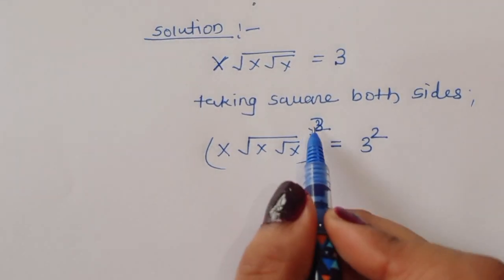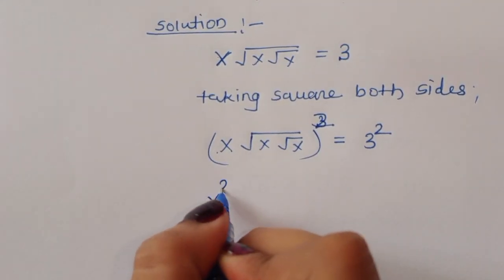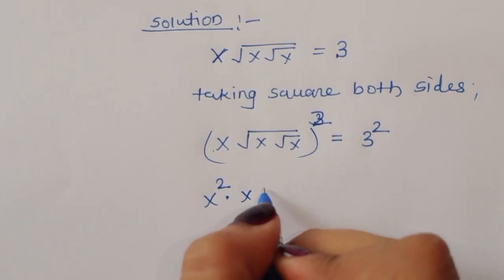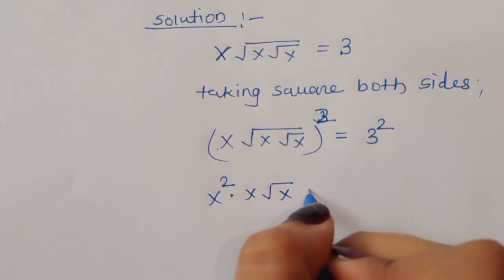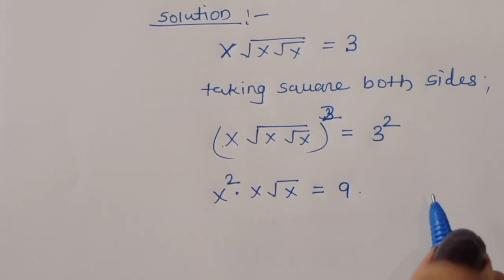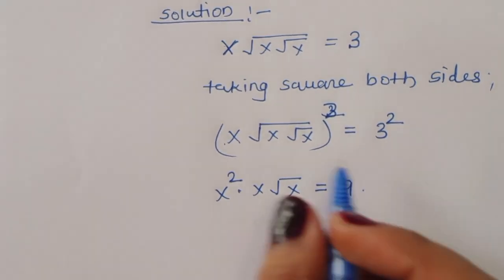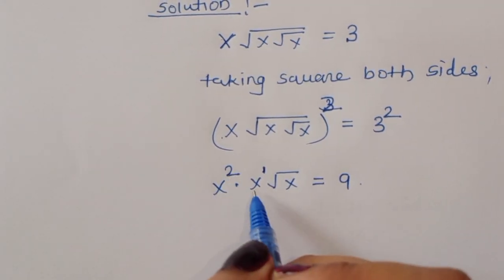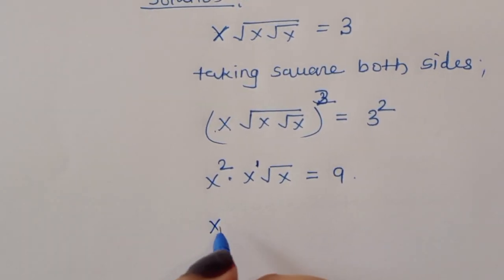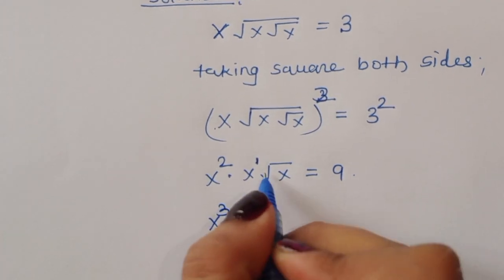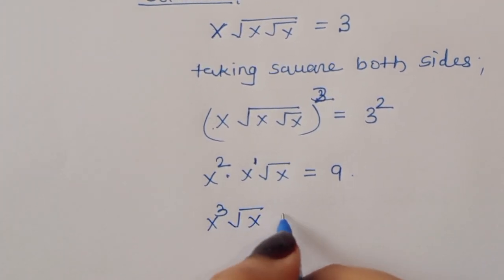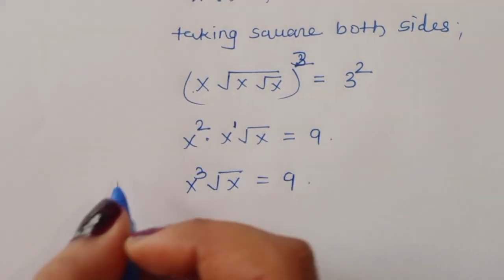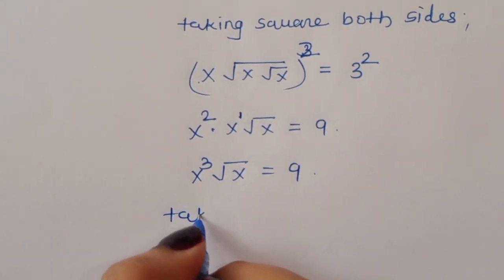The square cancels with the square root, giving us x squared times x times square root of x equals 9. We can write x power 2 times x power 1, so x power 3 times square root of x is equal to 9. Now we can take a square again.